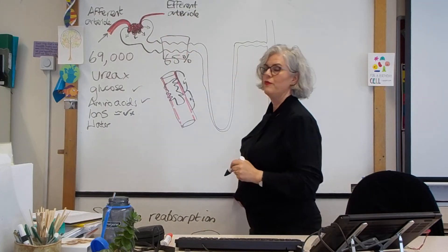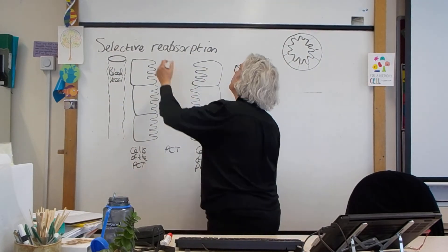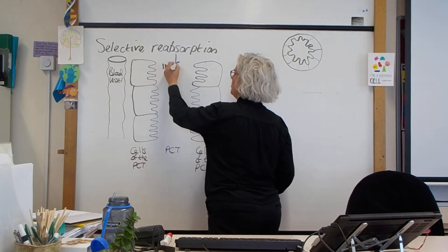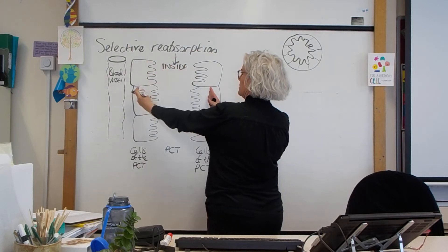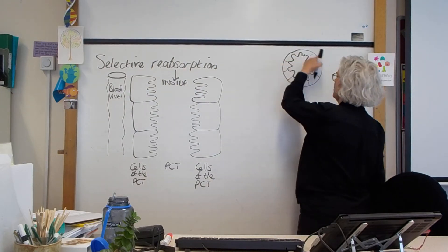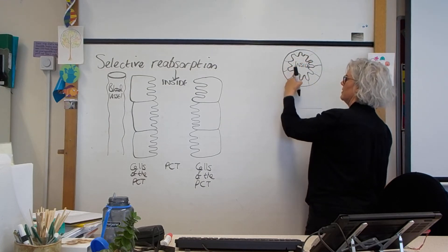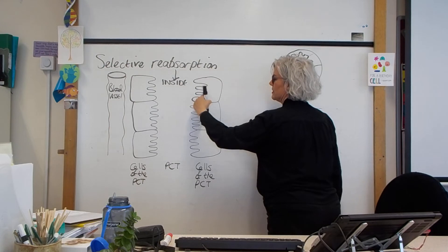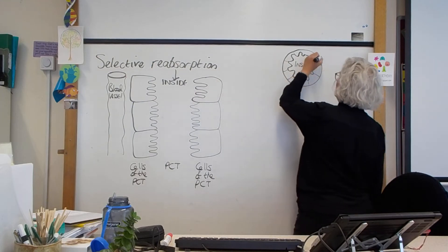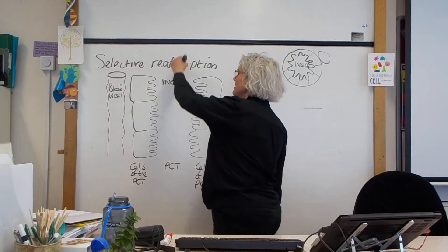Let's look at a cross-section of the proximal convoluted tubule. We're coming from the glomerulus, so this is the inside of the tubule. These are the cells that make up the proximal convoluted tubule — you can see the microvilli on the inside, and the blood vessels on the outside. This space here is the filtrate.